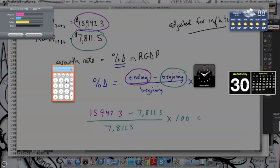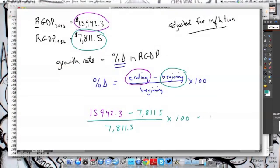We have 15,942.3 minus 7,811.5, divide that by 7,811.5. We want to multiply that by 100 to get it into a rate, and we have 104.09, if we round it to two decimals, so 104.09%.